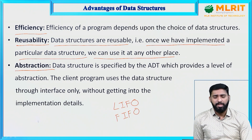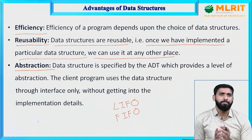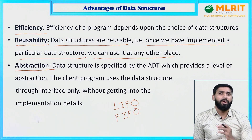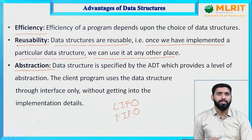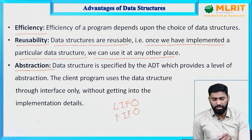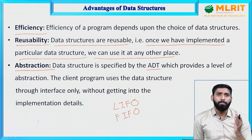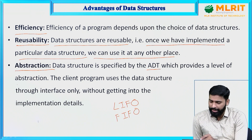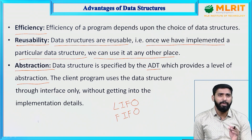Abstraction means simply hiding. The meaning of abstraction is hiding the implementation of the data structure. Data structure is specified by the ADT — Abstract Data Type — which provides a level of abstraction. The client program uses the data structure through its interface only, without getting into the implementation details.